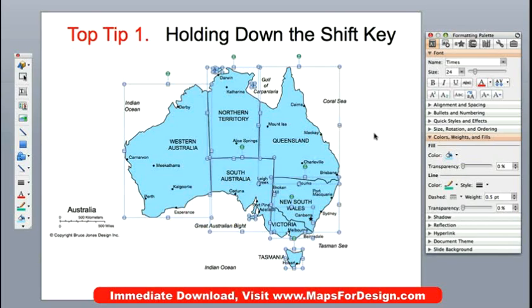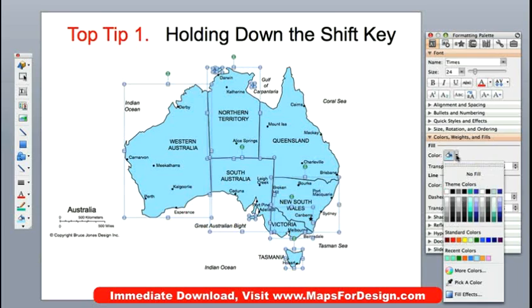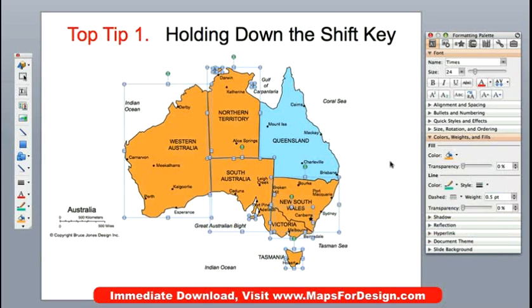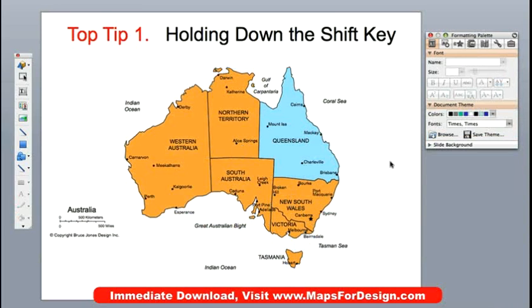If I have my shift key held down, it's kind of like a toggle switch — I can click on and click off. So let's click that off. It's now deselected and I can change everything else into another color just like that. Very easy to do. The shift key is a very powerful key and really helps you when you're customizing maps.